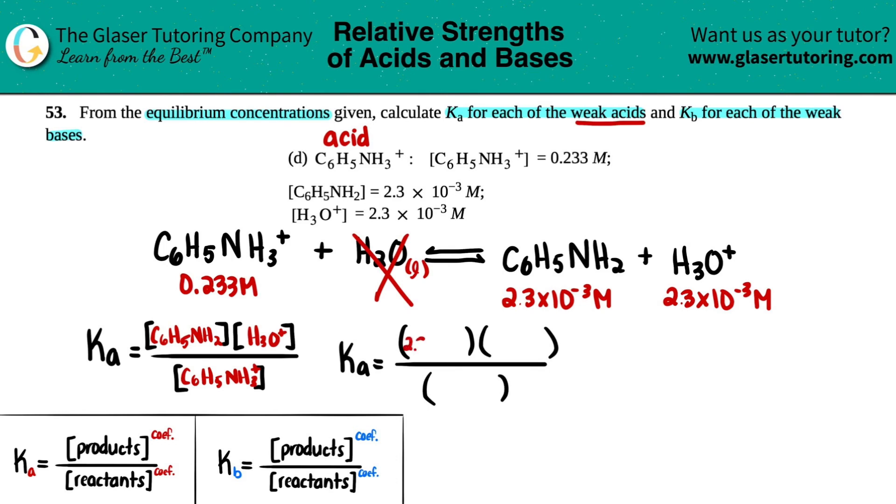2.3 times 10 to the negative third, 2.3 times 10 to the negative third. And then for the reactant, it's 0.233. Okay. Calc is out. Let's find out what that Ka value is.